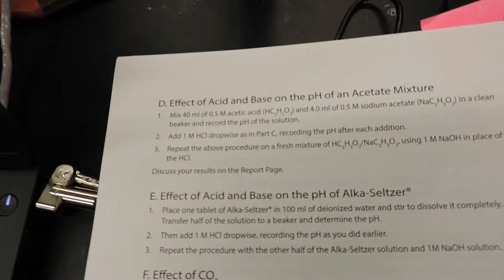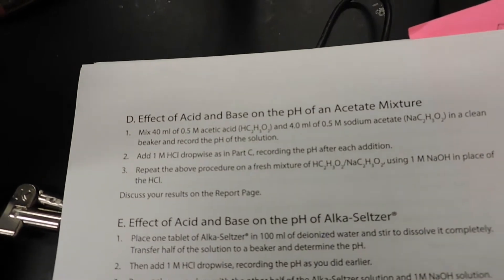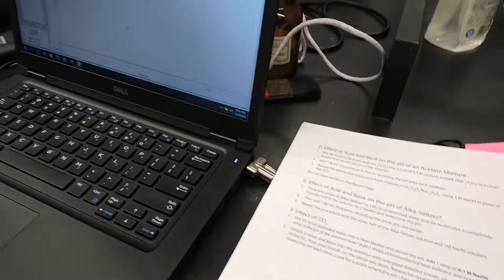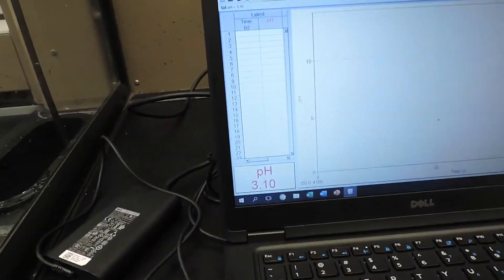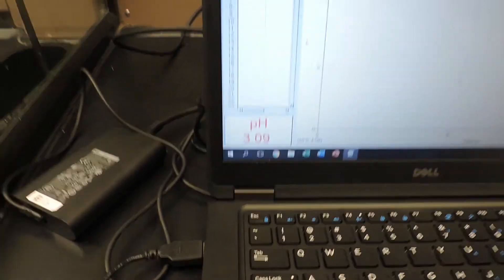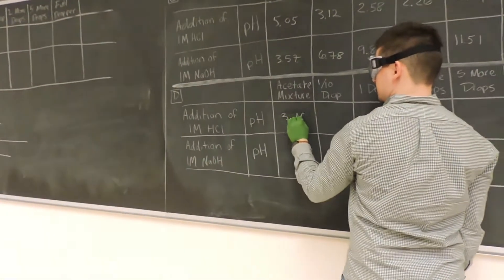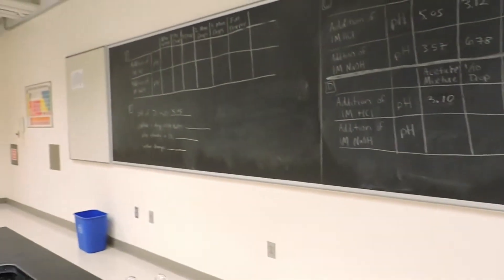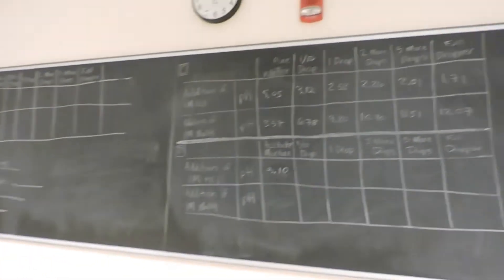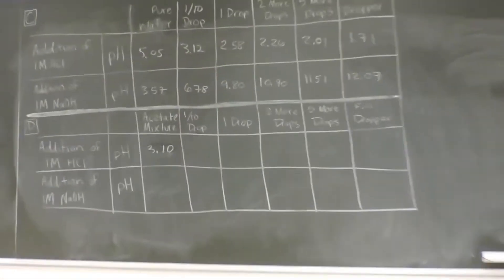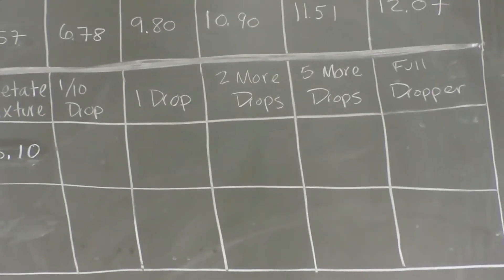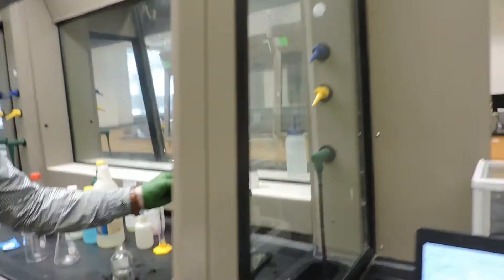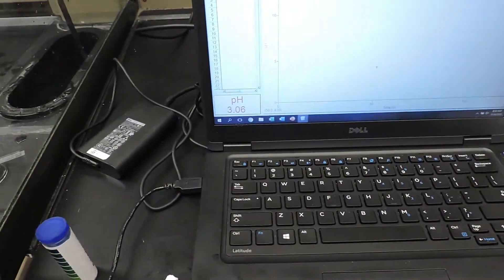Now we're moving on to part D, the effect of acids and bases on the pH of acetate mixture. We've mixed acetic acid and sodium acetate in a beaker, and we're going to record the pH initially, which is 3.10. This is for the adding the acid drop wise. We're doing it the same way we did with just the water where we're adding those specific drops of each, the acid and the base. We're going to start with the acid so our tenth of a drop goes first and we're going to see how the pH is affected.